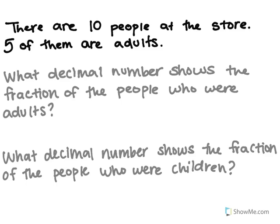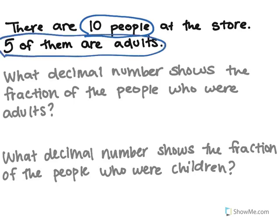So the question says, there are 10 people at the store. Five of them are adults. What decimal number shows the fraction of people who were adults? Well, I look into the problem. I can see 10 people were at the store. Five of them were adults.